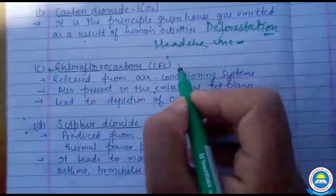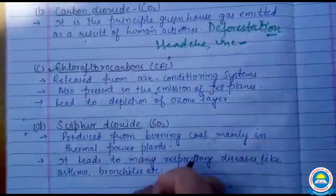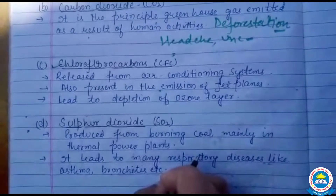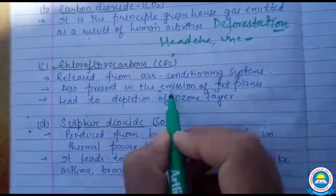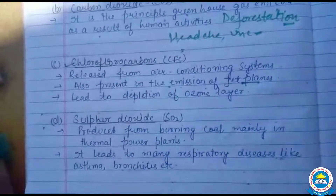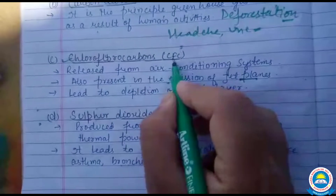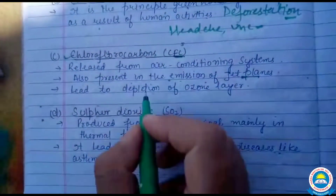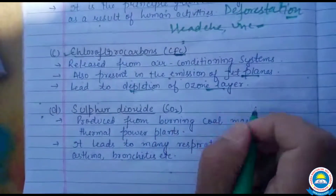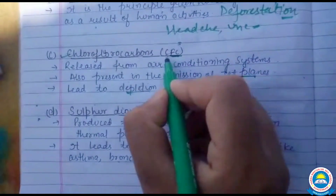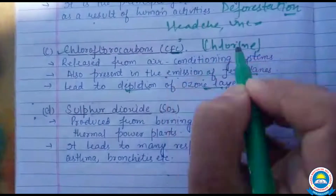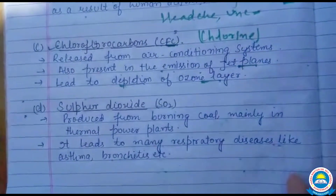अगले pollutant हैं CFCs यानी chlorofluorocarbons। यह gases release होती हैं from air conditioning systems and refrigerators, और jet planes के emissions में भी present होती हैं। Chlorofluorocarbons का सबसे बड़ा role है — it leads to the depletion of the ozone layer। CFC का chlorine part जब stratosphere में जाकर gases के साथ mix होता है तो ozone depletion होती है।